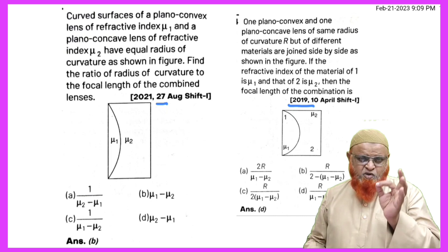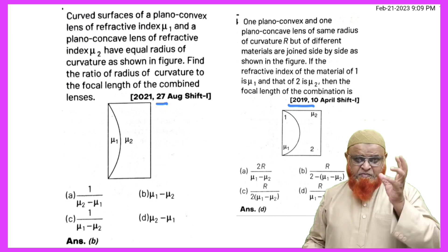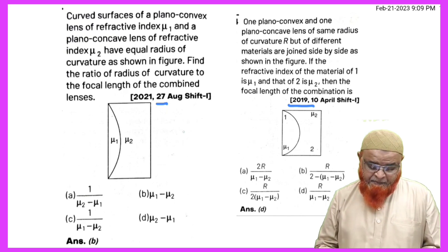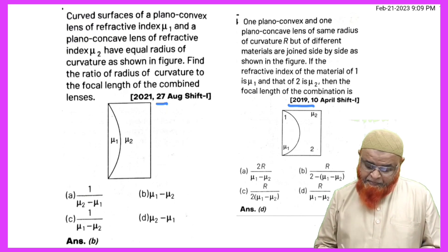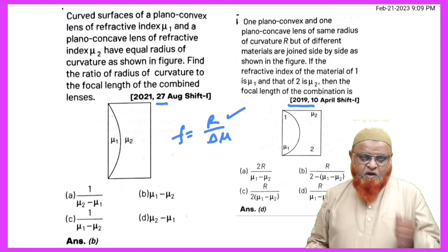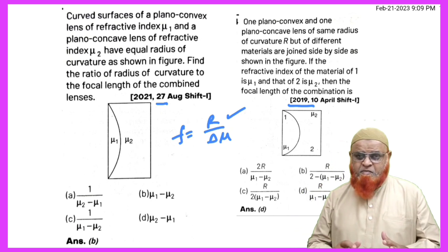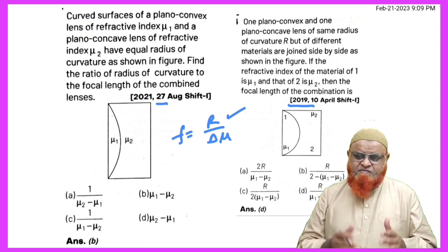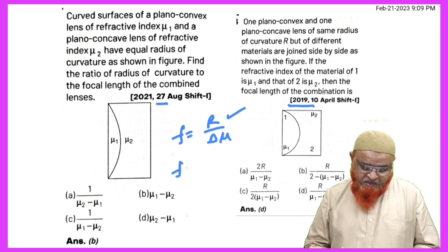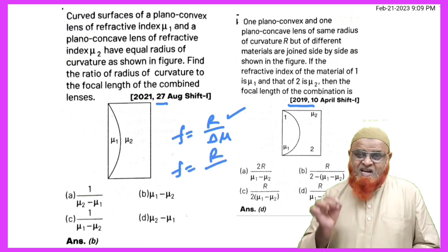One small technique to remember for this type of problems: when plano-convex is clubbed with plano-concave, just remember one thing - you have to find out focal length is equal to r by Δμ. If you remember this formula, that is more than enough to solve the problem. F is equal to r by Δμ, where Δμ is nothing but μ₁ minus μ₂, that's it.